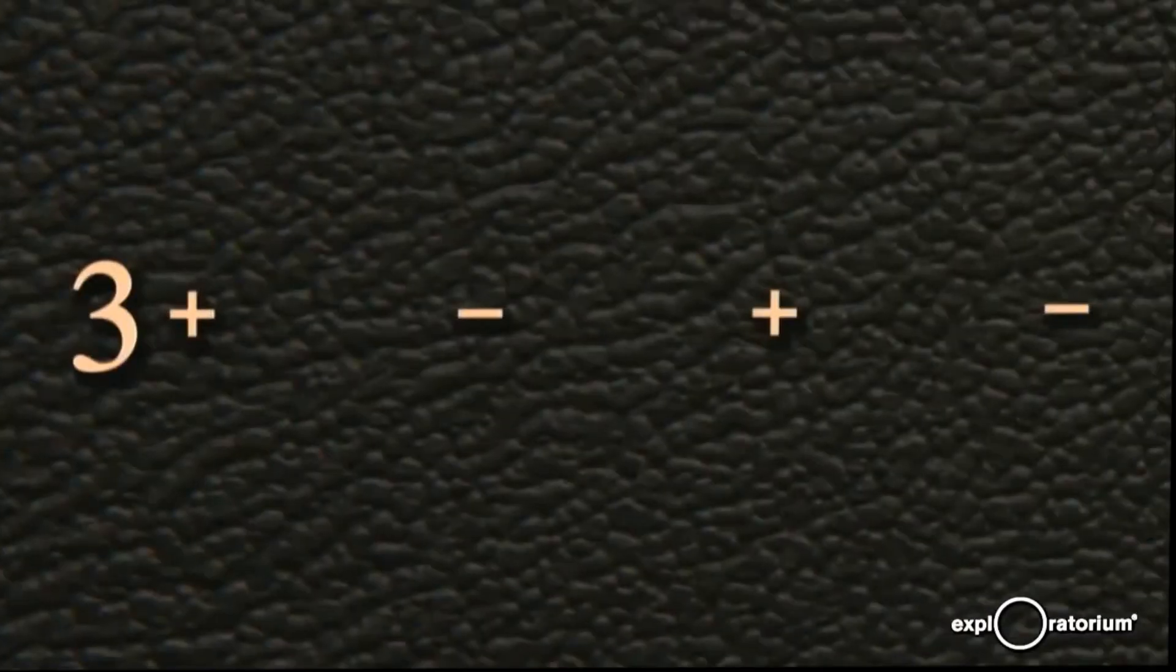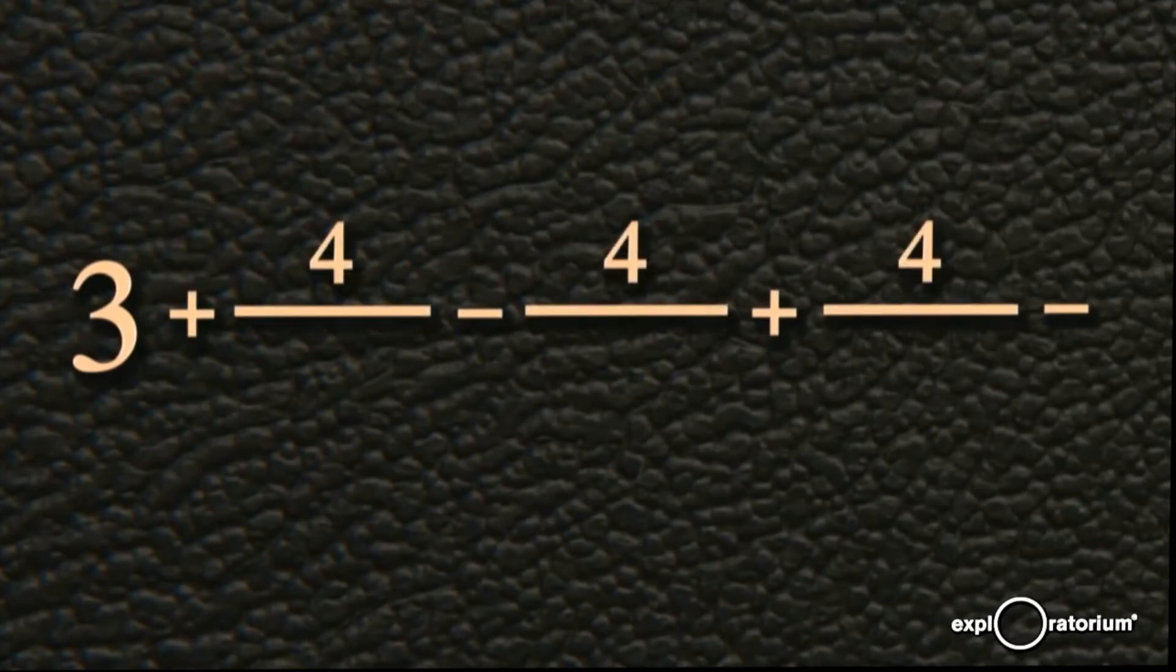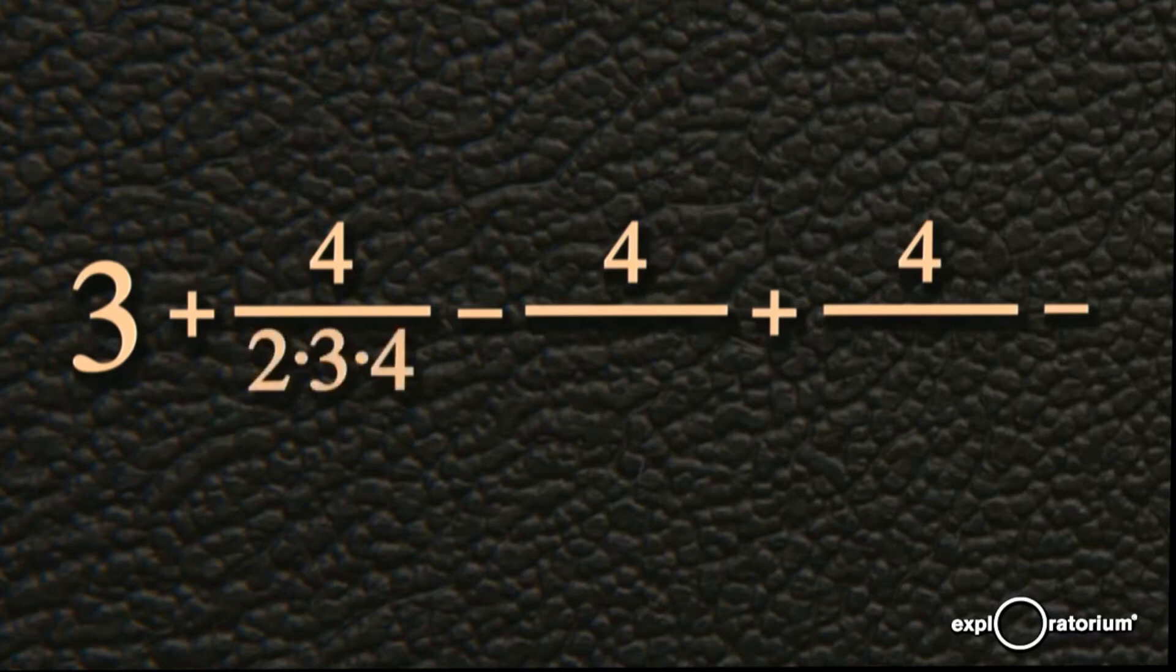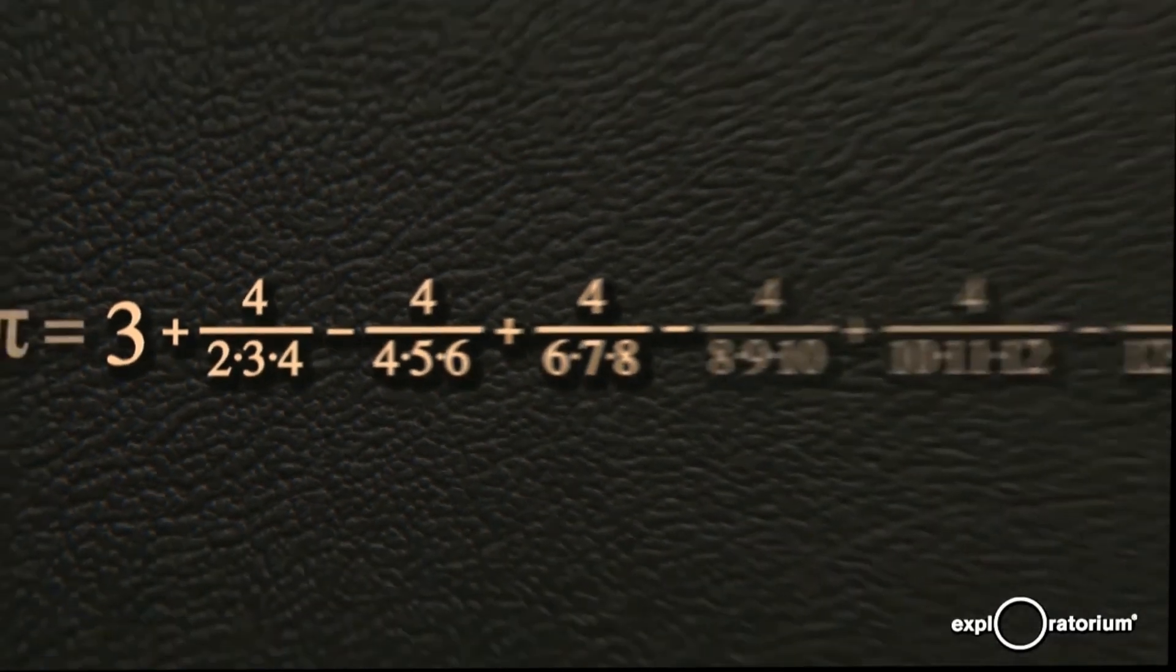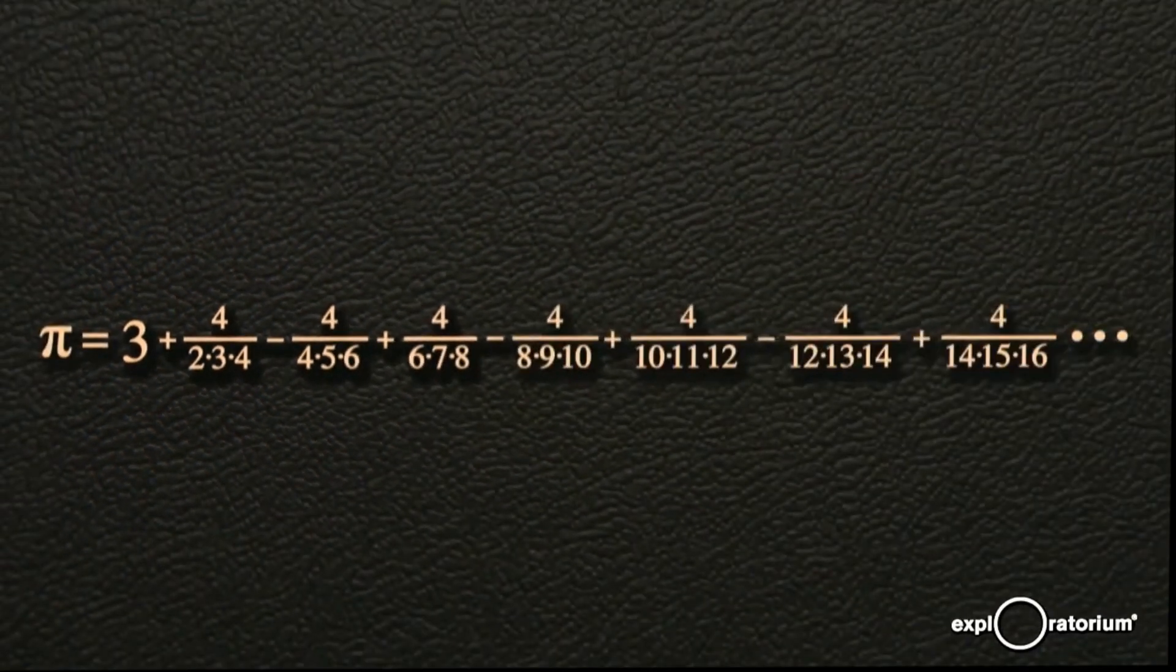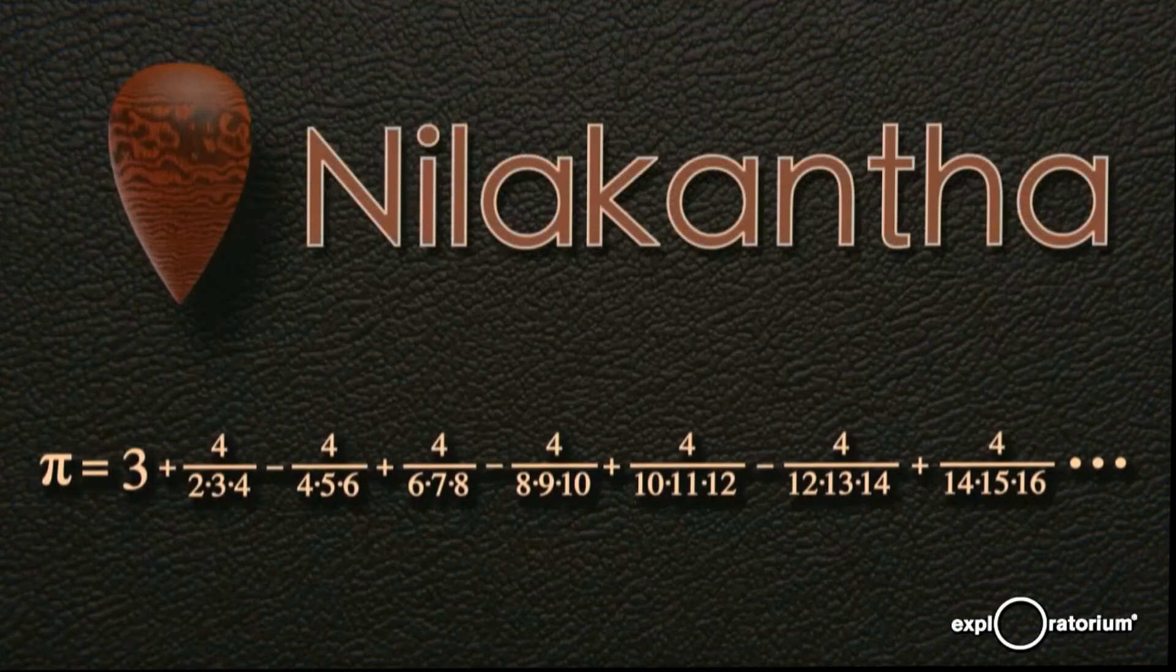So here's a slightly faster way of calculating pi. Start with three. And then again, we're going to add and subtract a series of things. These are all going to be fractions which will all have four at the top. The first fraction will have two times three times four at the bottom. The next one will have four times five times six. The next one will have six times seven times eight. So the pattern here is that you just have these products of sequential three sequential numbers along the bottom. This is known as the Nilakantha method. It was discovered around 1500 also in India.